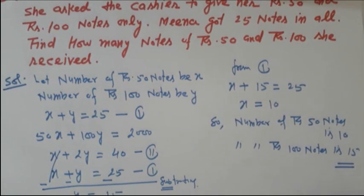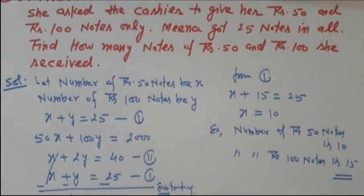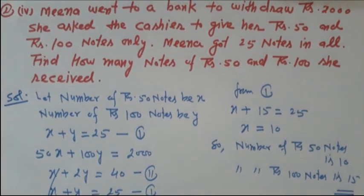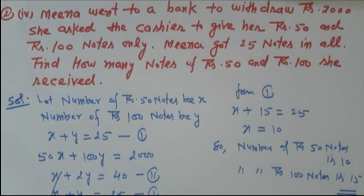This is the answer for question number 2, part 4. Today in this video I have solved some selected questions from exercise 3.4 of the NCRT book class 10, based on solving pairs of linear equations by the elimination method. I hope all the steps and calculations are clear to you. All the best, thank you.